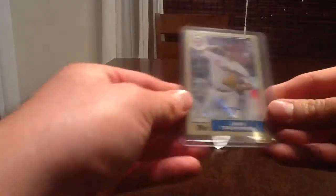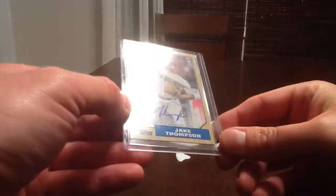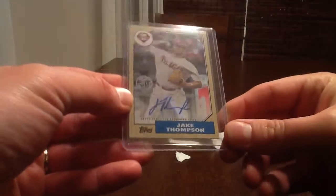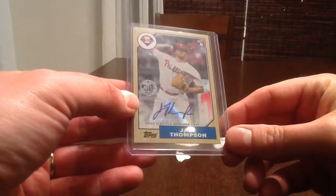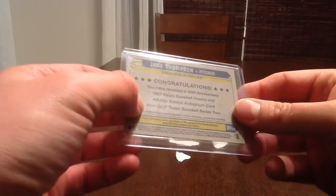And there we have it. A Jake Thompson Rookie Sticker Auto from the 87 set of Topps. Topps Baseball Series 2.